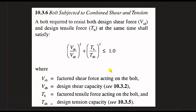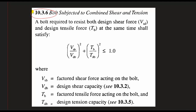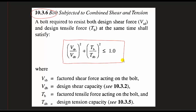In previous videos, we discussed how we can check the adequacy of such a bolt, and that can be seen in IS-800. IS-800 gives a formula to check the adequacy of such bolts, given in clause 10.3.6. This gives an empirical formula that has to be satisfied if the bolt is safe — one term related to shear and one term related to tension.